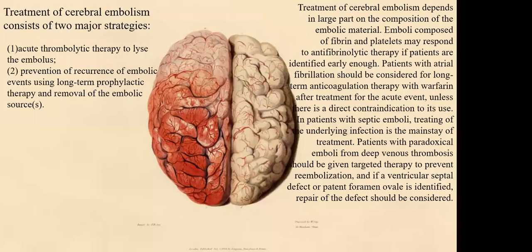Treatment includes two major strategies: acute thrombolytic therapy to lyse the embolus, and prevention of recurrence using long-term prophylactic therapy and removal of the embolic source. Treatment depends in large part on the composition of the embolus. Emboli composed of fibrin and platelets respond to thrombolytic agents such as streptokinase or urokinase.